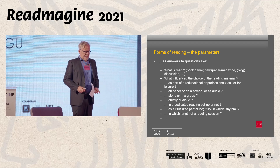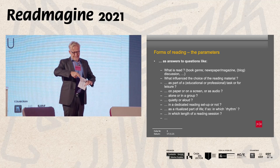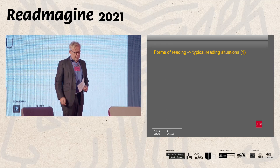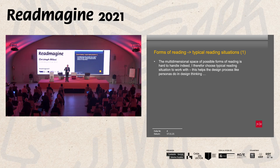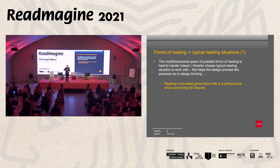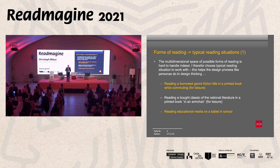So these are the parameters for the forms of reading. If you see that as a space, it is very multi-dimensional and very hard to handle. Therefore, I have taken paradigmatic reading situations which can be used a bit like personas in design thinking. I have nine or ten of them — please observe only the orange or orange-yellow ones because I will come back to them in three or four minutes. One of these reading situations is reading a borrowed genre fiction title in a printed book while commuting and for leisure. Another is reading educational media on a tablet in school — a very different situation with respect to many parameters.